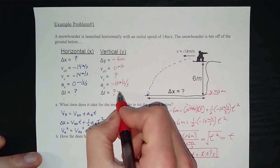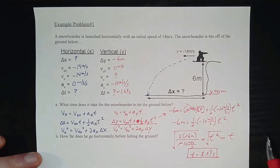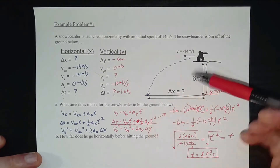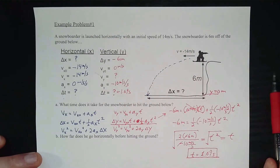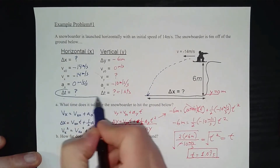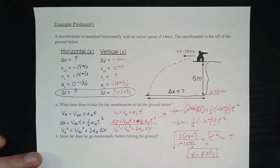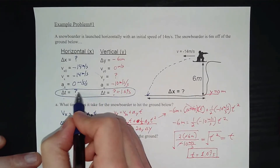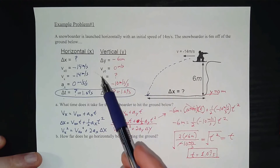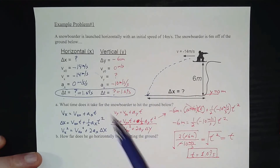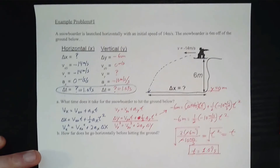We can add t = 1.09 seconds to our given information. The key insight is that the time spent falling vertically is the same as the time spent moving horizontally — it's the only value shared between both directions. So the snowboarder is also moving horizontally at 14 meters per second for 1.09 seconds, which allows us to solve for horizontal displacement.